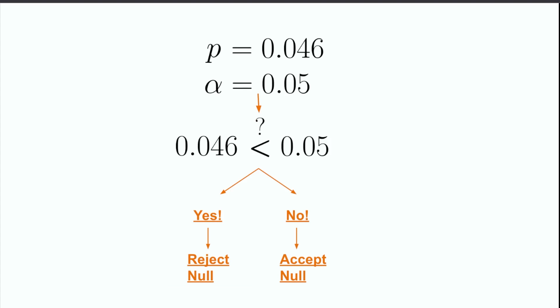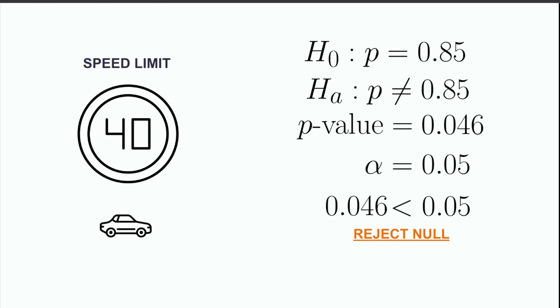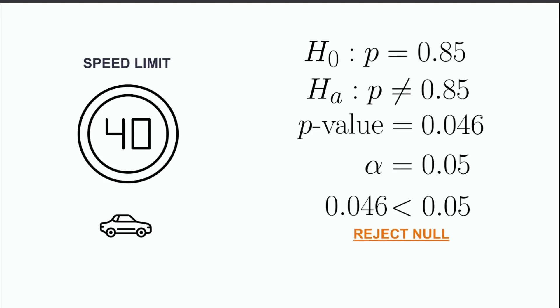Given our example numbers here, we would be able to say that 0.046 is less than 0.05, so the statement is true, and we can reject the null. If this had happened in the context of our car problem, we would be able to make the conclusion that we can reject the null, and that we can say that some proportion of drivers not equal to 85% currently obey the speed limit at a 5% significance level.